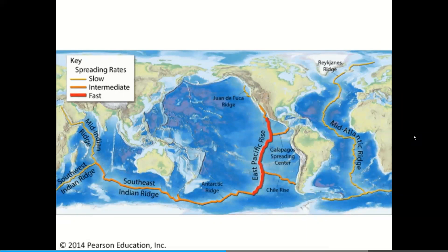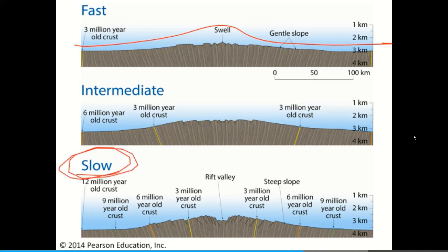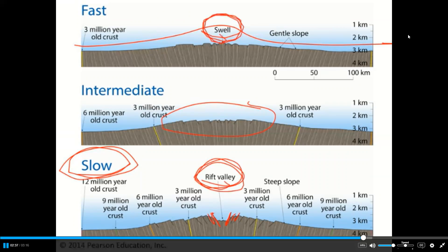Rates of seafloor spreading vary around the world. The Atlantic spreads relatively slowly, while the East Pacific Rise has rapid seafloor spreading. This manifests in the shape of the ridge: fast spreading produces no well-developed rift valley — just a smooth swell bulging upward — whereas slow spreading produces a very well-developed central rift valley marked by lots of normal faulting on either side. Intermediate rates produce intermediate structures.